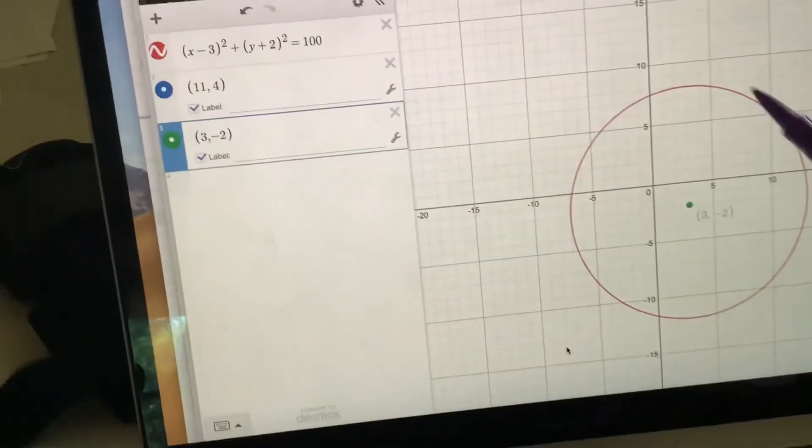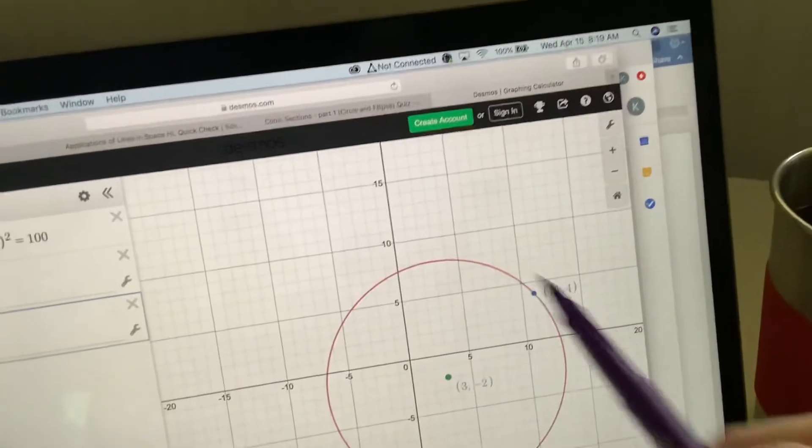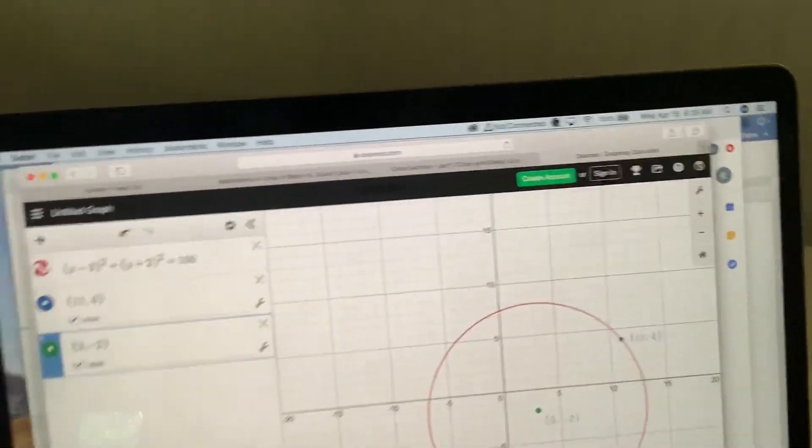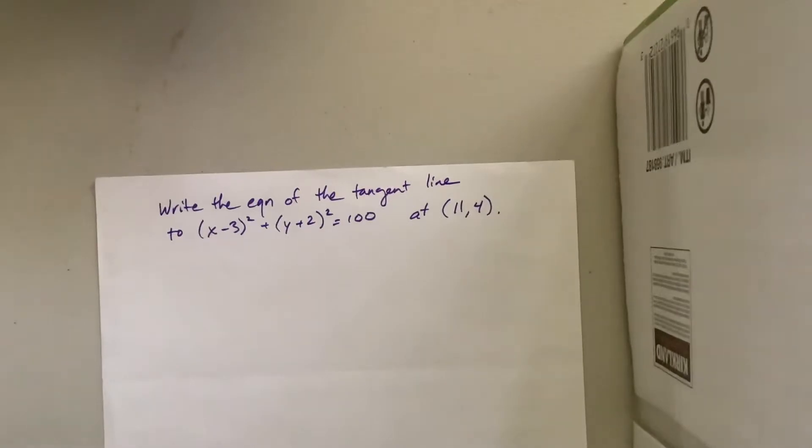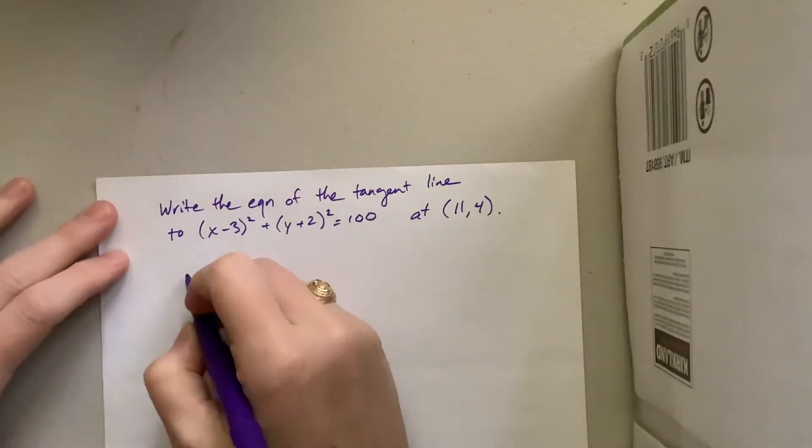So basically, they're asking us to find the equation of the tangent line. Oh, you can't see what I'm doing. The tangent line to that point. Okay, if you remember, let's see. So we can use Desmos to help us check. The more you can do by hand, the better.